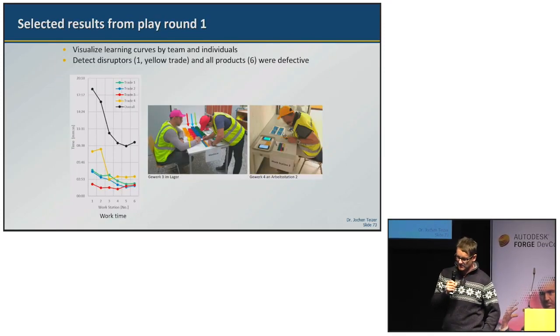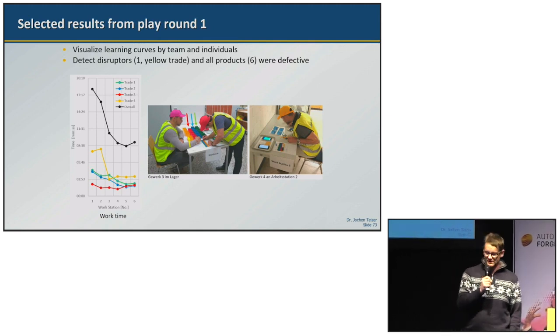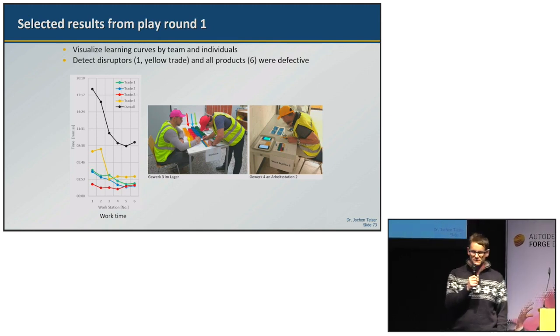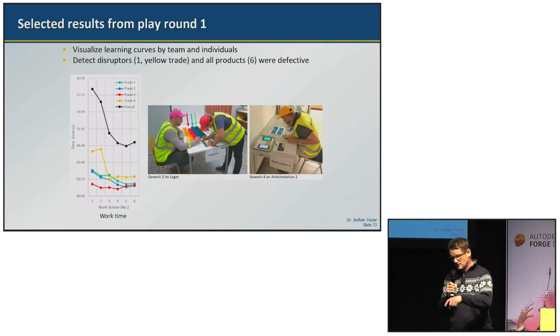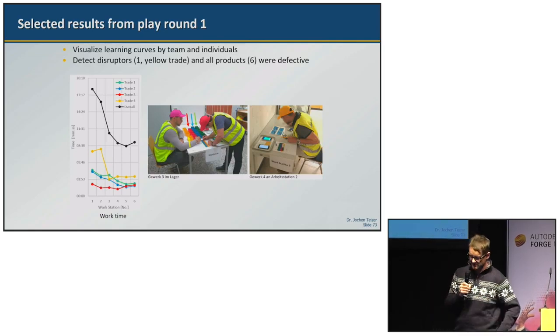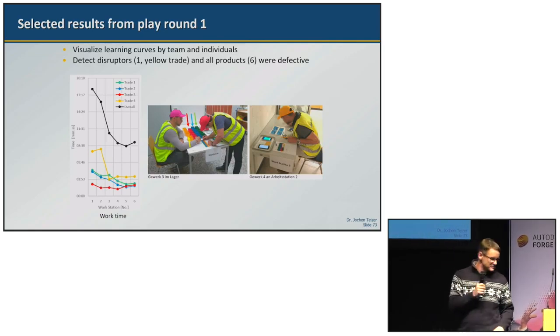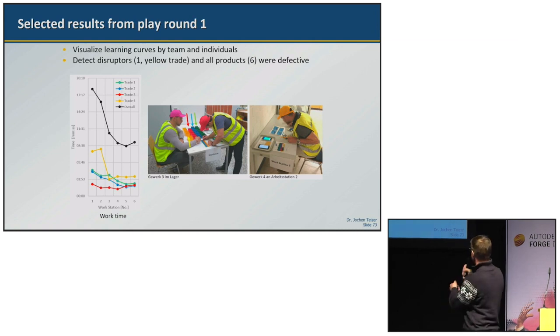Now here are the results. The black curve is just the work time. This is the learning curve of all of the trades. It shows you that after three, four times doing the same task you pretty much got it, how to assemble these pieces. What also can be observed is the yellow trade. I took a picture here. I pixelated his face because he was embarrassed somehow and asked me to pixelate his face.